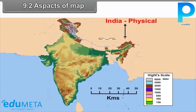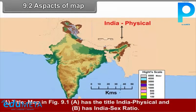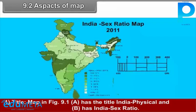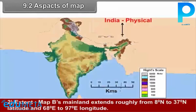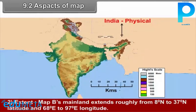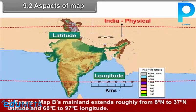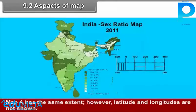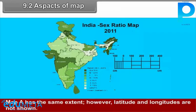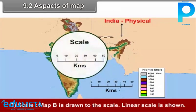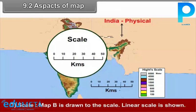9.2 Aspects of Map. 1. Title: Map in Figure 9.1A has the title 'India Physical' and Map B has 'India Sex Ratio'. 2. Extent: Map B's mainland extends roughly from 8 degrees north to 37 degrees north latitude and 68 degrees east to 97 degrees east longitude. Map A has the same extent; however, latitudes and longitudes are not shown. 3. Scale: Map B is drawn to scale and a linear scale is shown.